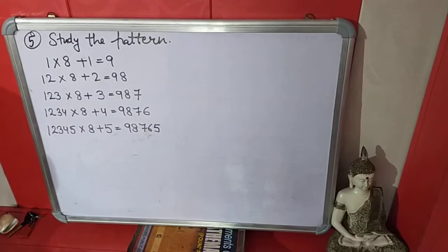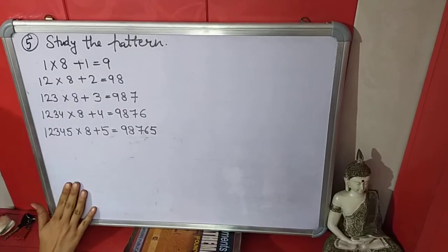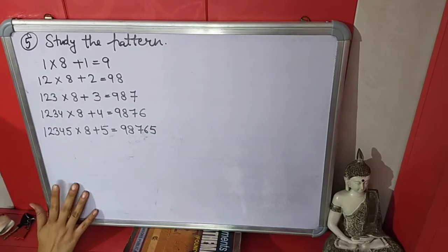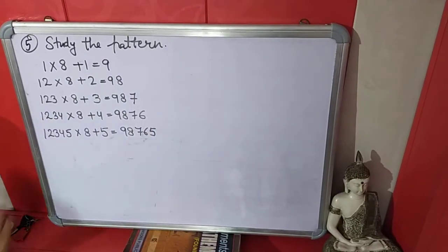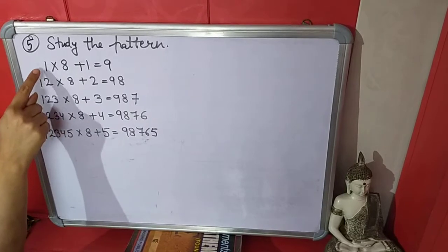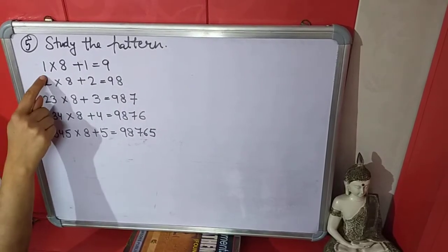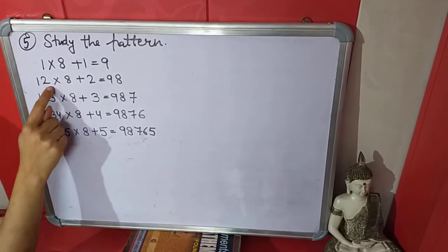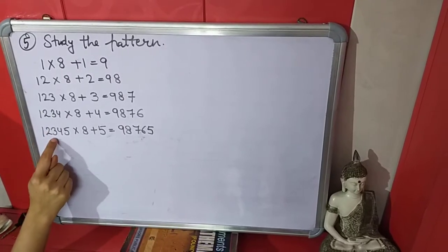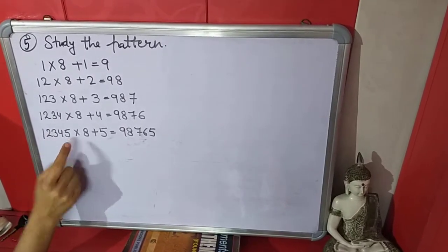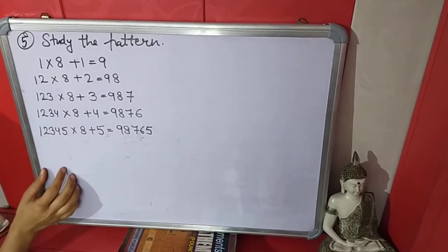The fifth question is: study the pattern and write the next two steps. We will observe this pattern. First we observe the first line. The sequence is: 1; then 1, 2; then 1, 2, 3; then 1, 2, 3, 4; then 1, 2, 3, 4, 5. It is counting — each line adds one more number to the sequence.